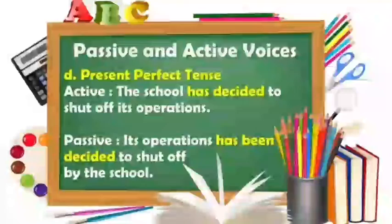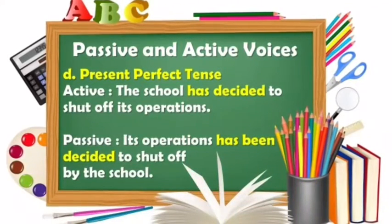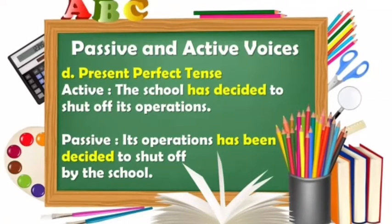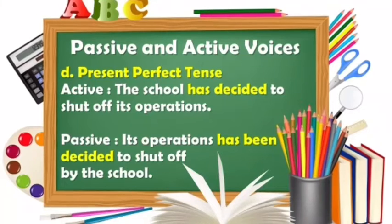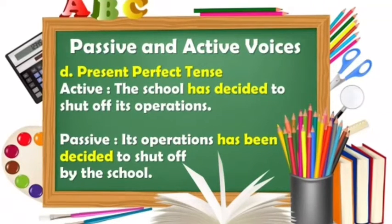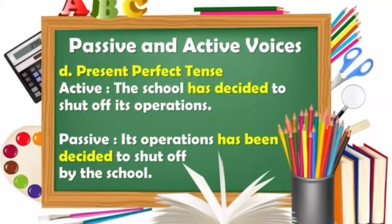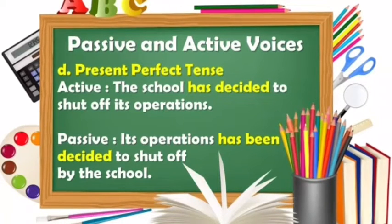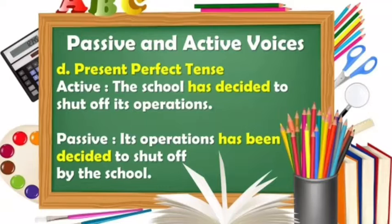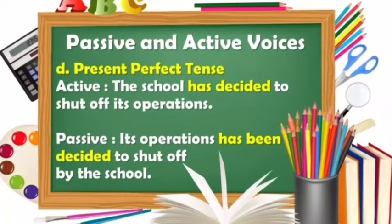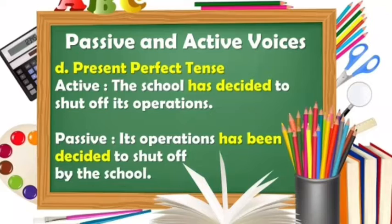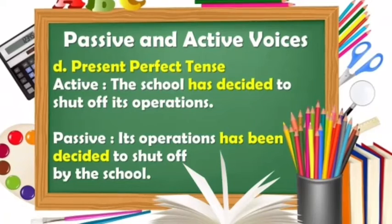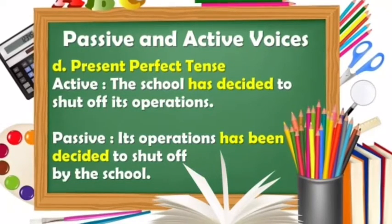Next is present perfect tense. In active voice: 'The school has decided to shut up its operation.' If we transform it into passive voice: 'Its operation has been decided to shut up by the school.' Its operation is the object, has been decided is the action, and by the school is the subject.